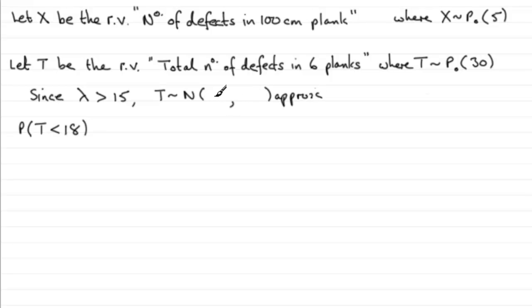Like all normal distributions, we have two parameters: the mean and the variance. Well, the mean is 30, and the variance of a Poisson distribution is always the same as the mean, so the variance will be 30 in this case. Now we've got to work out the probability that T is less than 18.